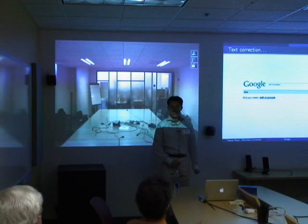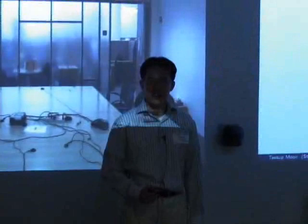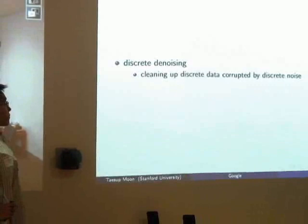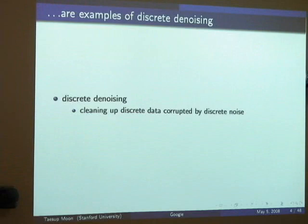Suppose you want to correct a misspelling from a corrupted text, like what Google's search engine does every day. Or imagine you have scanned an image and want to remove noise injected by a scanner. These problems can be formulated in terms of a more general framework called discrete denoising, where you want to clean up discrete data corrupted by discrete noise. The main goal is to extract clean or relevant information from noisy observations.